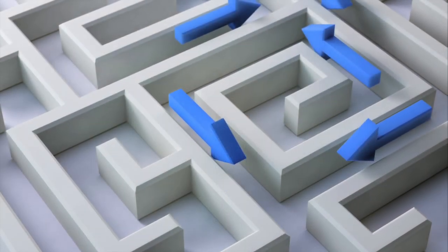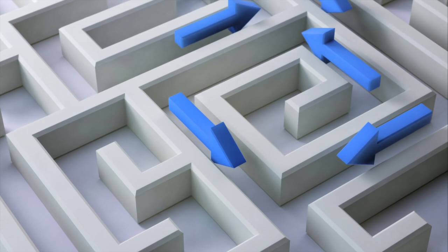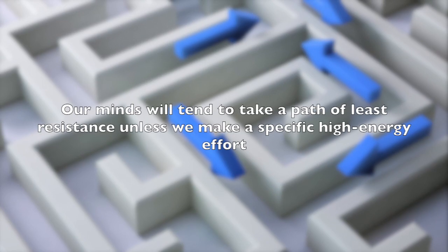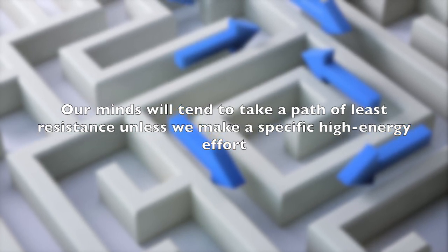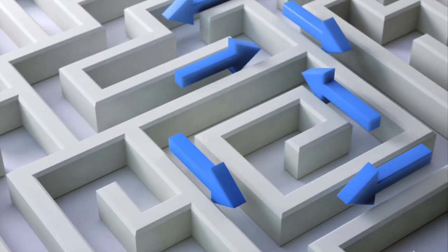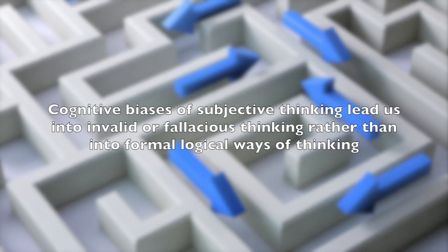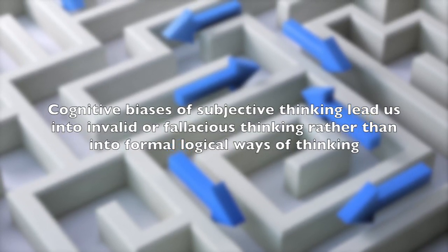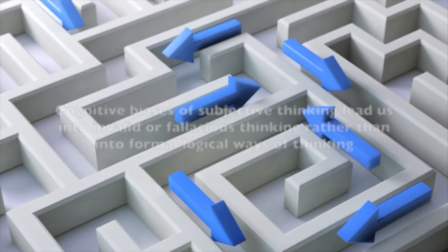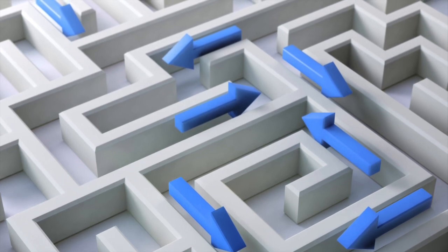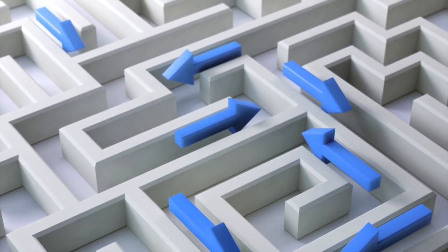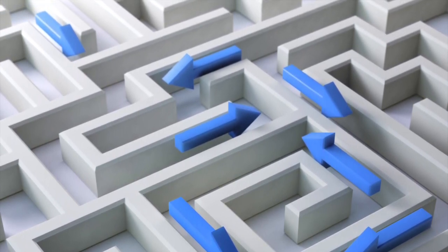All thinking by its nature is subjective, but by adhering to standards we try to achieve greater objectivity in our thinking. Our minds will tend to take a path of least resistance unless we make a specific, high-energy effort to step out of these processes and think in a more clear and logical manner. Cognitive biases of subjective thinking lead us into invalid or fallacious thinking, and these biases are numerous, pervasive, and require a concerted effort to remove them by applying cognitive standards to our thinking.